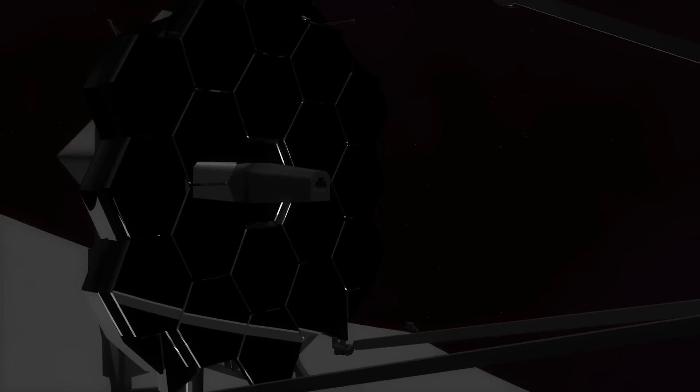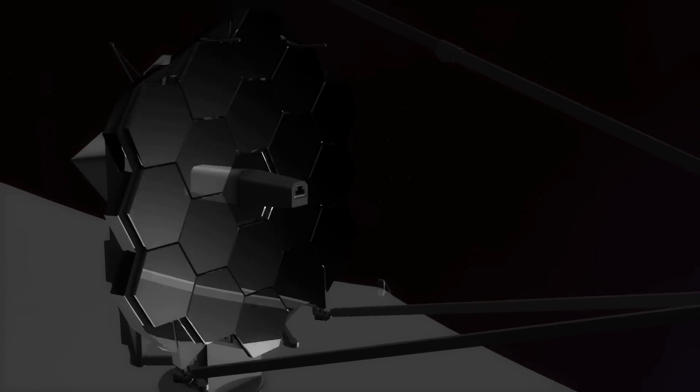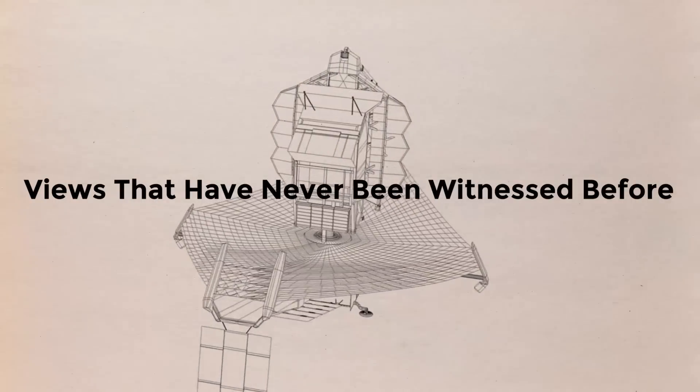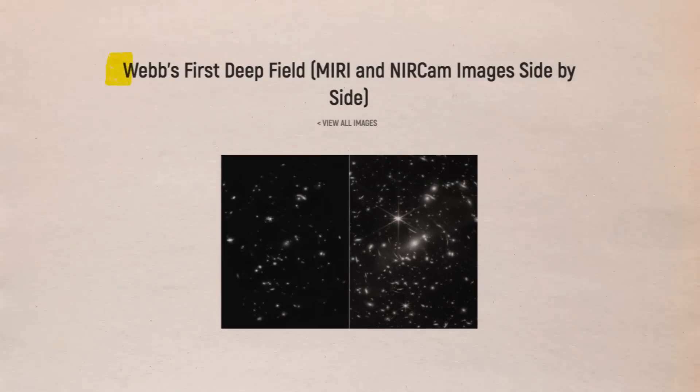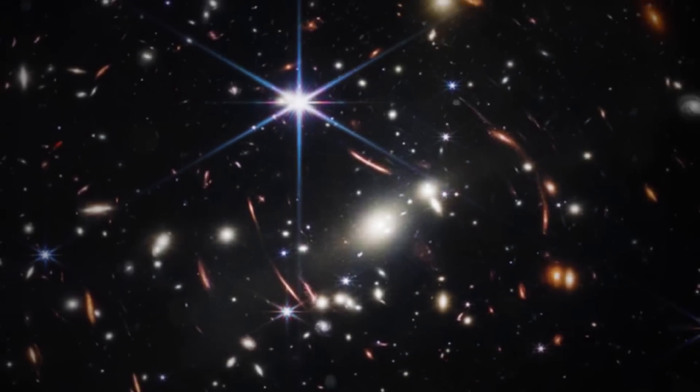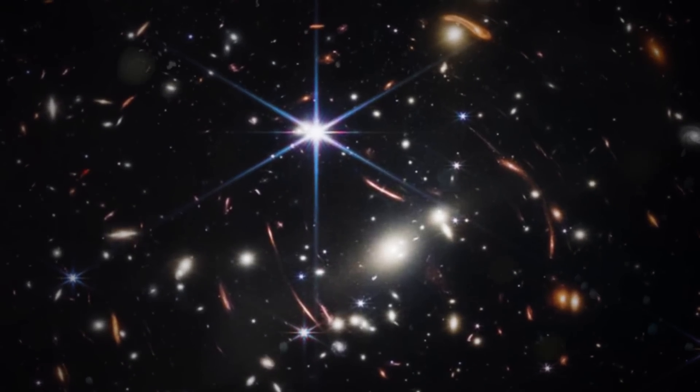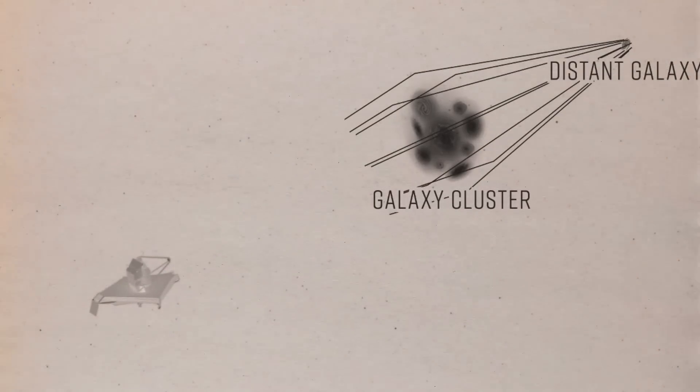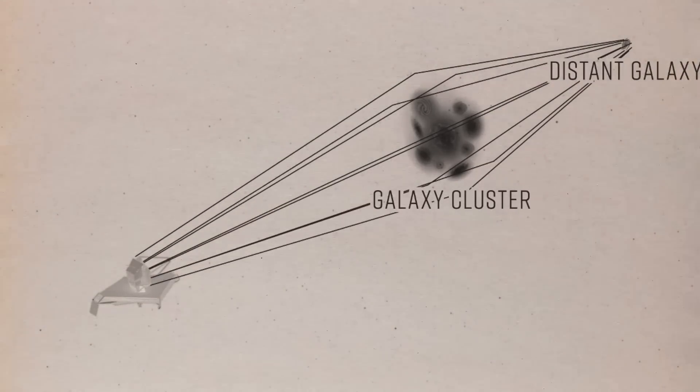The anticipation around the newly released images is palpable, as they were made public with views that have never been witnessed before. The first image, known as Webb's first deep field, was the first to be made public. It shows a large collection of galaxy clusters acting as a magnifying glass for the objects that are located behind them, furthering our viewpoint to the early points of the universe.